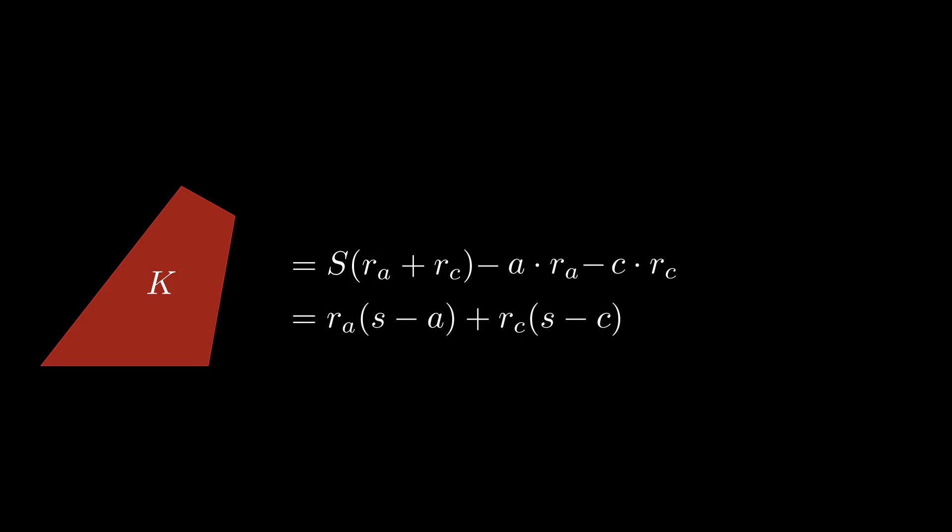Adopting Conway's convention of abbreviating s minus a as sa, we have k equals RaSa plus RcSc. Performing the same calculations with these opposite sides and excircles results in the corresponding formula k equals RbSb plus RdSd. Awesome! We've reached the launching point for our proof of Brahmagupta's formula.